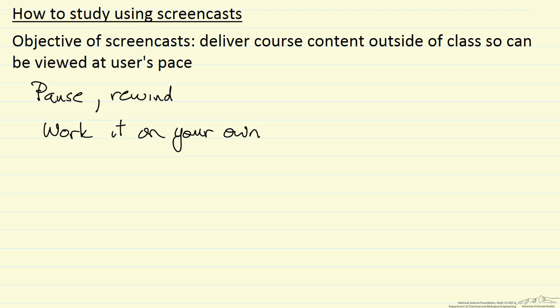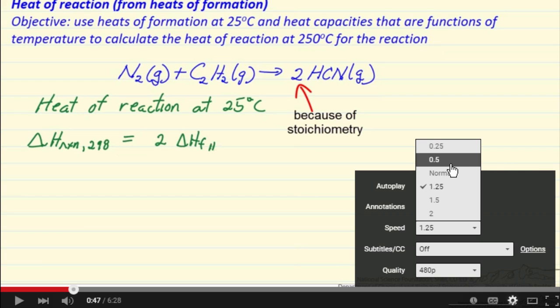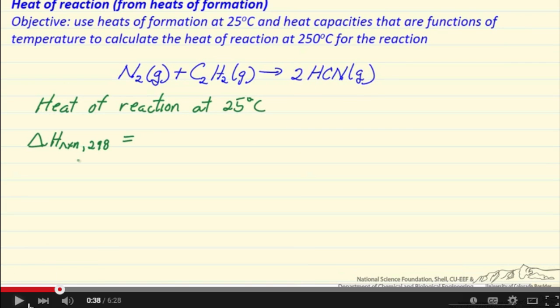Another thing you can do to use screencasts more effectively is you can change the speed. Instead of normal, we could have it go faster, or we can slow it down and go at half speed or quarter speed to give us more time to digest the information. And of course we can hit play and pause, and we can rewind to help us understand and check something instead of just going through directly.